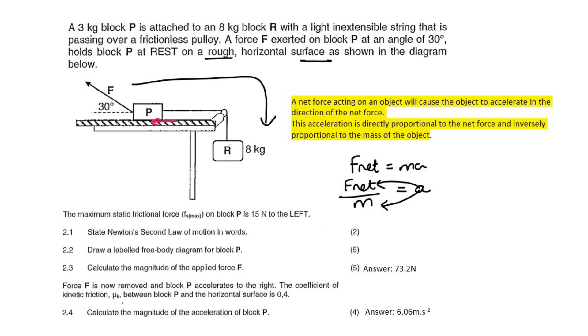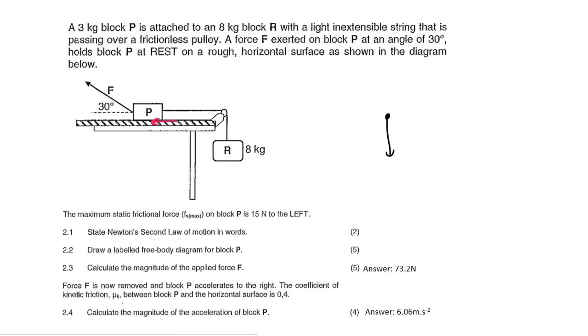Moving on to question 2.2, they want us to draw a free body diagram of block P. So we know for block P, it's got gravity, a normal force, a tension force, and then there's a frictional force acting to the left. And there is an applied force acting to the left, or a little bit left and a little bit up. Now, some of you like to do your free body diagrams like this. But then some of you prefer to do it this way. Let me show you another way.